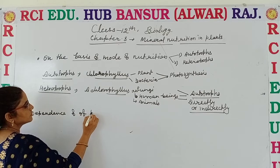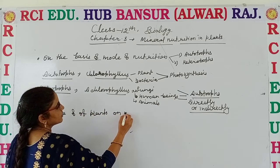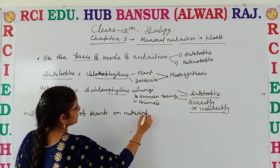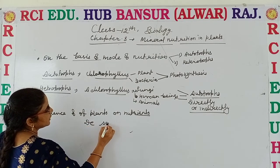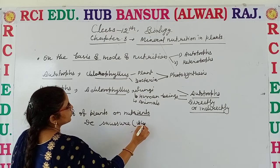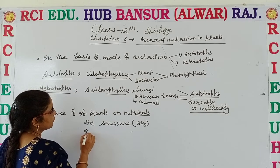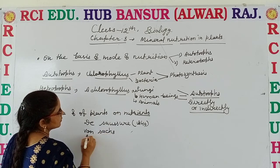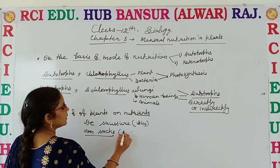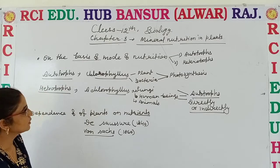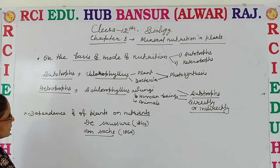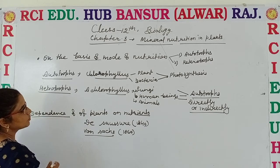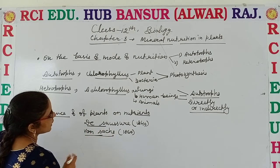The dependency of plants on nutrients was first experimentally proved by D. Saussure in 1840, and later on it was explained by Boussingault in 1860. So here we discussed that nutrients are essential for plants, animals, and even bacteria. We divided plants and animals on the basis of nutrition into two parts, and the dependency of plants on nutrients was established by Saussure and Boussingault.